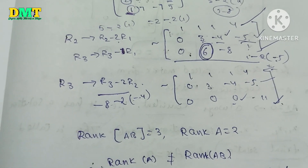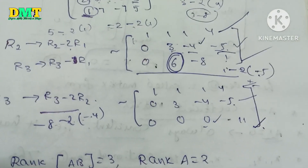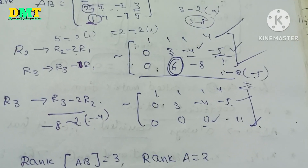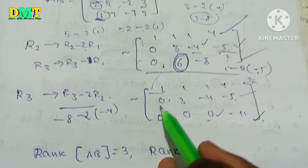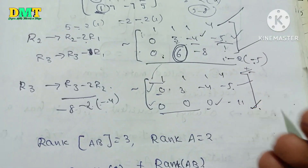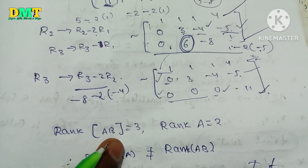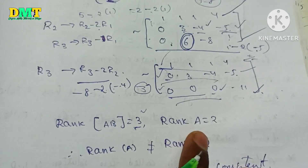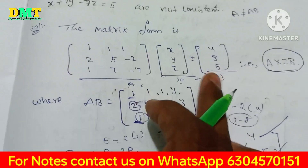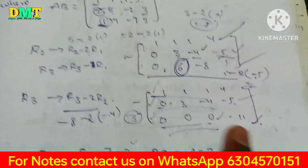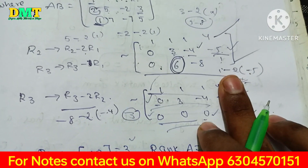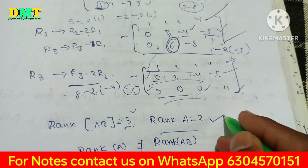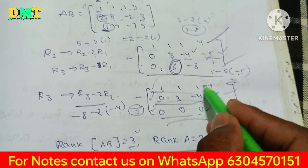So the rank of [A|b] is equal to the number of non-zero rows. The echelon form shows all three rows are non-zero, so rank of [A|b] equals 3. Now we find the rank of A. Looking at matrix A after row reduction, the number of non-zero rows gives rank A equals 2.